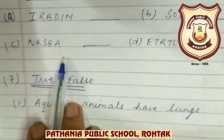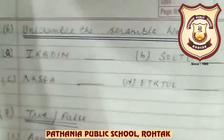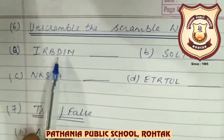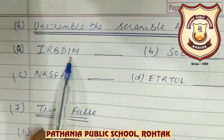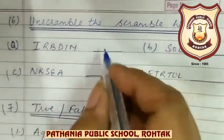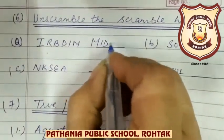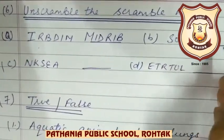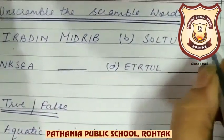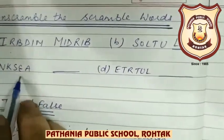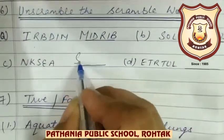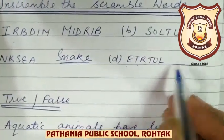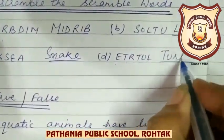Now unscramble the words. First: I I R B D I M — what is this beta? Midrib. S O L T U — Lotus. N K S E A — Snake. E T R T U L — that is Turtle.